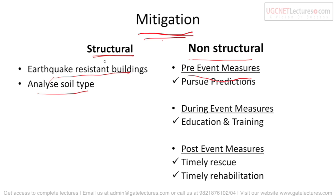The first is structural mitigation — what buildings and structural efforts can we make? The first measure is earthquake-resistant buildings. If we build structures that can withstand earthquakes, the loss of property and life will be reduced. For example, in Japan it is believed that 2–3 small earthquakes happen daily, and 10–12 large earthquakes occur per year on average, yet buildings don't collapse because they are earthquake-resistant. We also need to analyze soil type, as building on soil that can easily collapse during an earthquake is problematic.